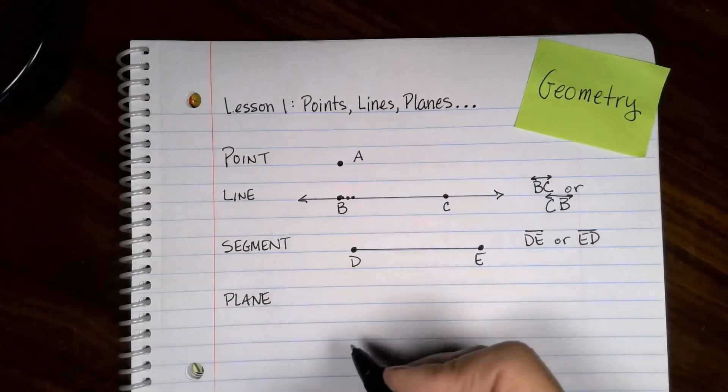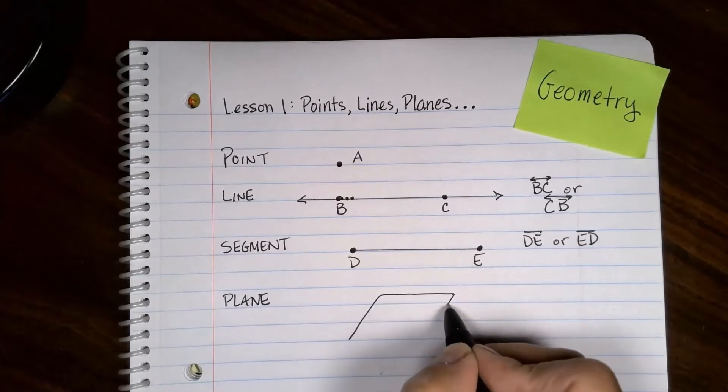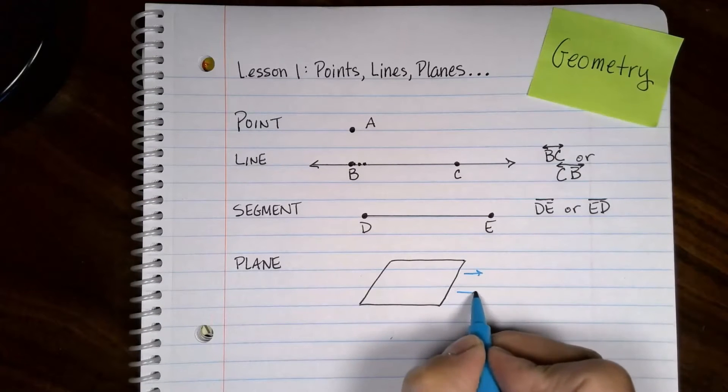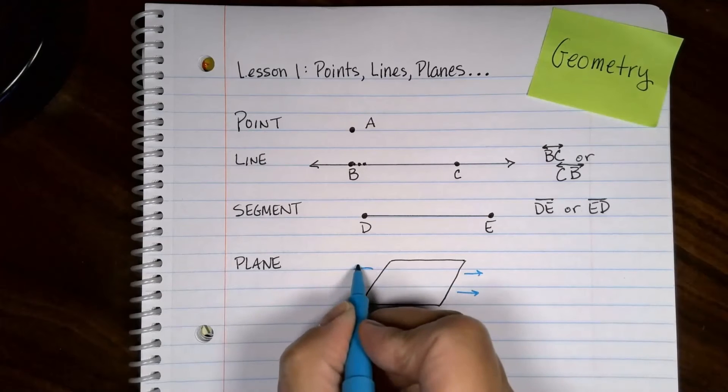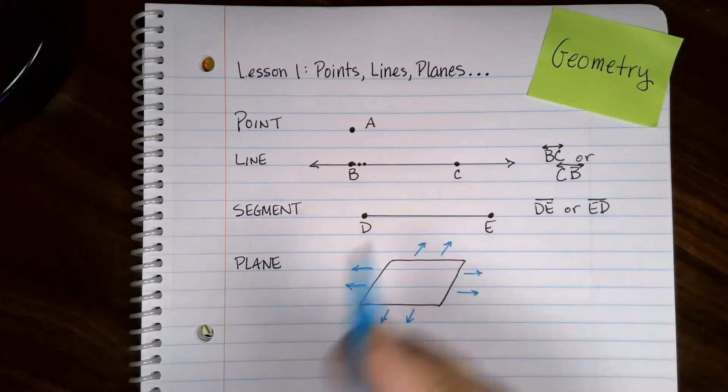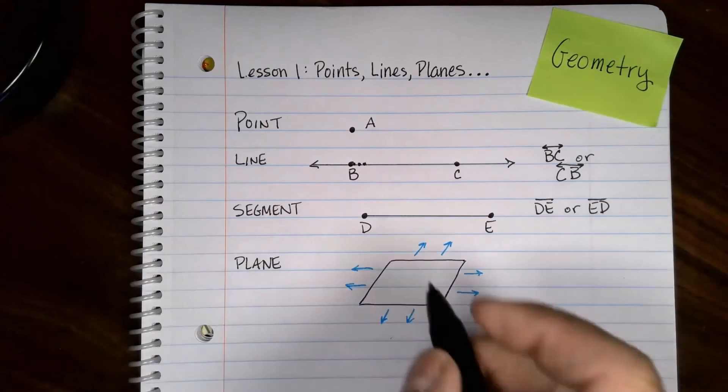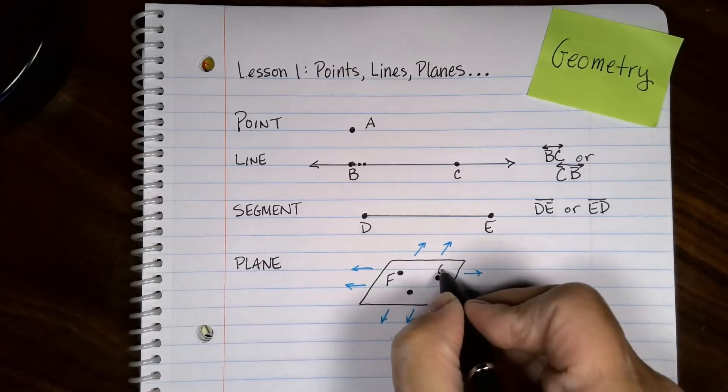These are a little bit hard to draw on a piece of paper, so I do something like this. You have to imagine this thing is going forever and it has no edges on it. A piece of paper has edges on it, but this thing doesn't. To name a plane you have to have three points. I'm up to E, so this would be F, G, and H.